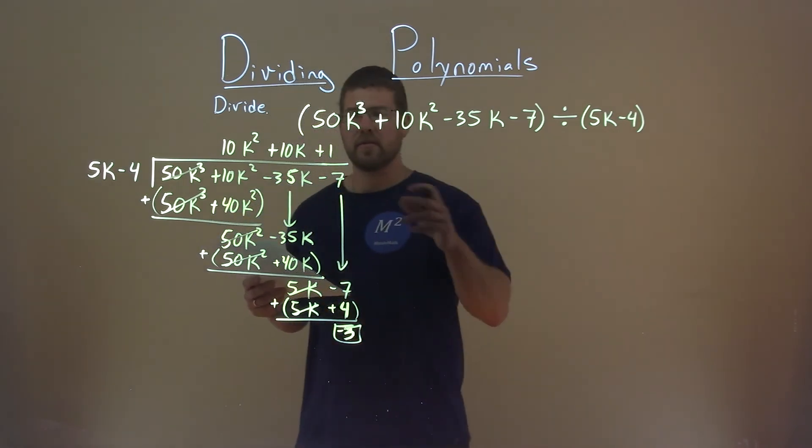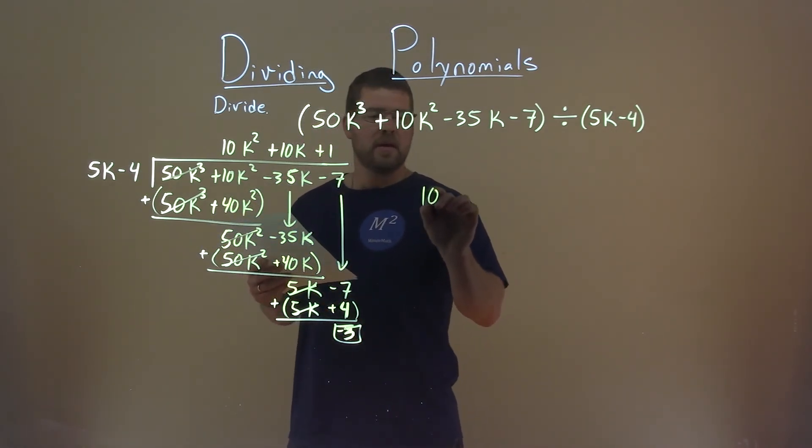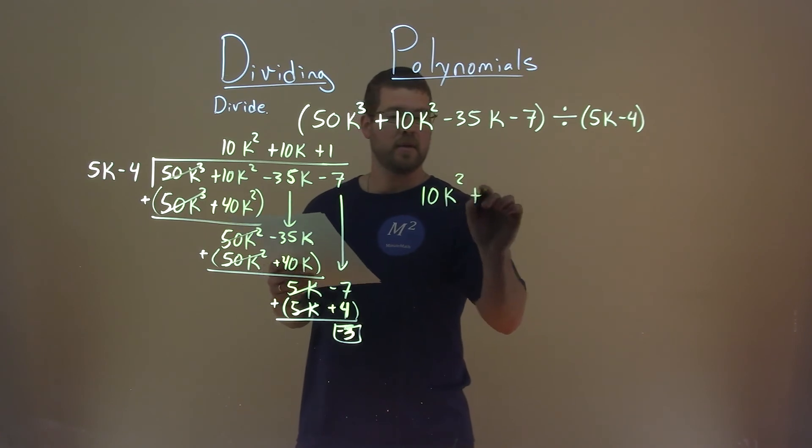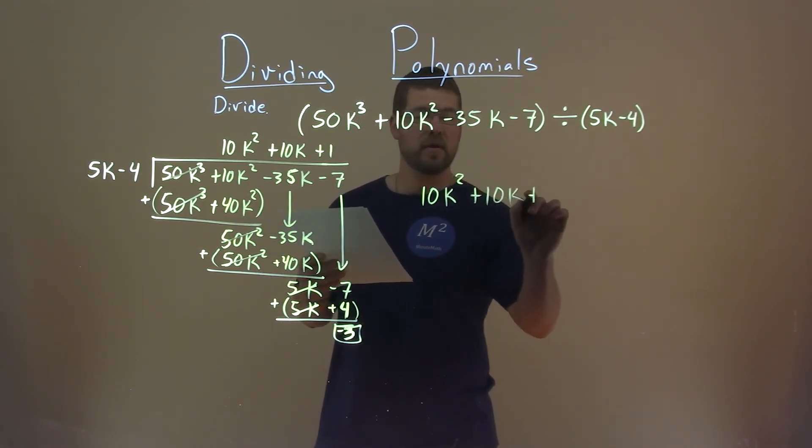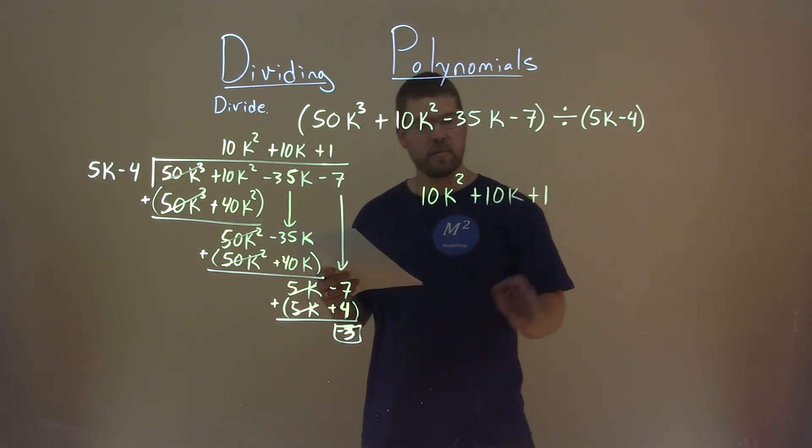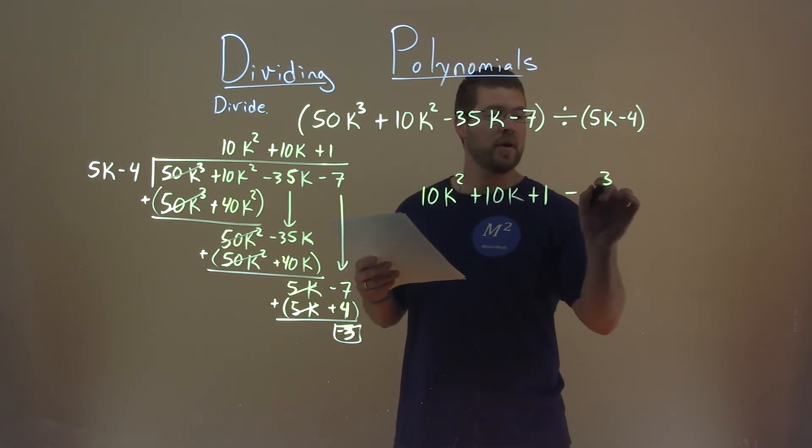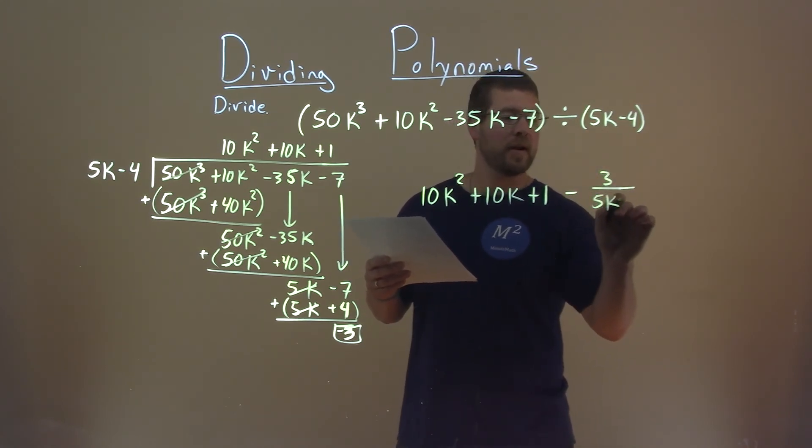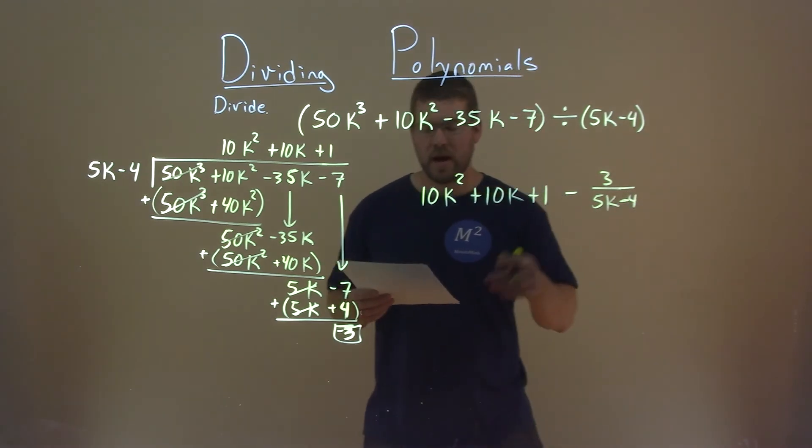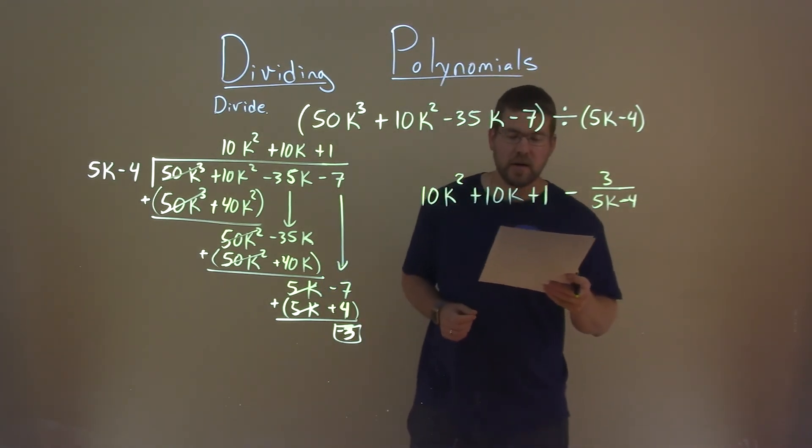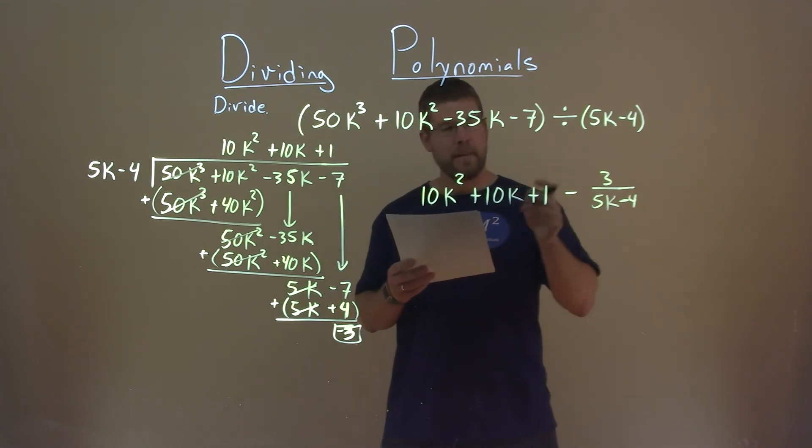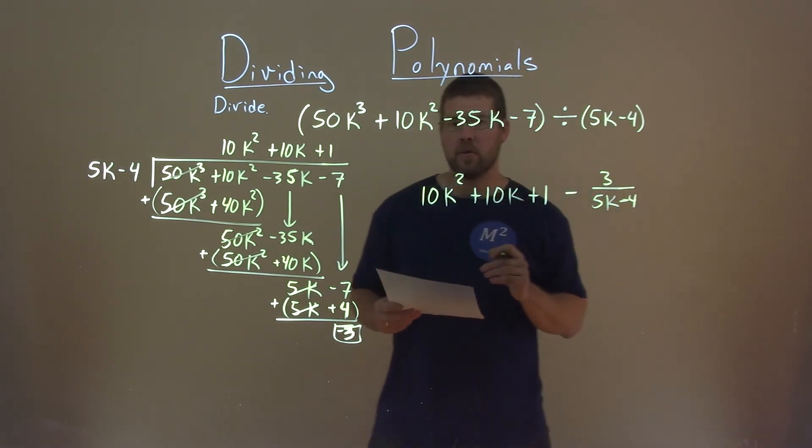So how can we apply this? Let's bring down the first part. 10k squared plus 10k plus 1. And then our remainder is minus 3. So we have minus 3 over what we're dividing by here, 5k minus 4. And there we have our final answer. 10k squared plus 10k plus 1 minus 3 divided by 5k minus 4.